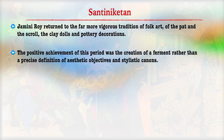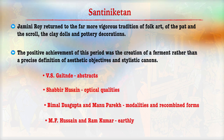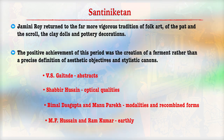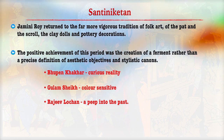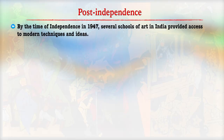The positive achievement of this period was the creation of more aesthetic value and new styles. For example, Zubair Hussain focused on optical qualities; Vimal Das Gupta focused on new forms; M.F. Hussain and Ram Kumar on various aspects related to earth; Bhupen Khakhar on curious reality; Ghulam Sheikh specialized in colour sensitivity; and Rajiv Lochan looked into the past in terms of painting. The list is exhaustive, but each artist had their own way of expression and contributed to the preservation of modern Indian painting art.